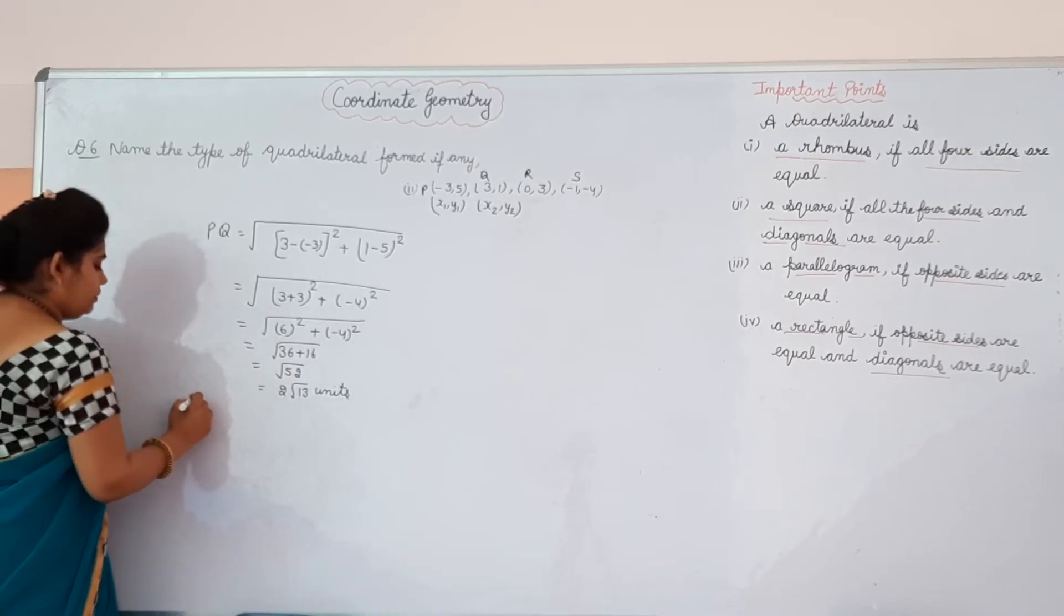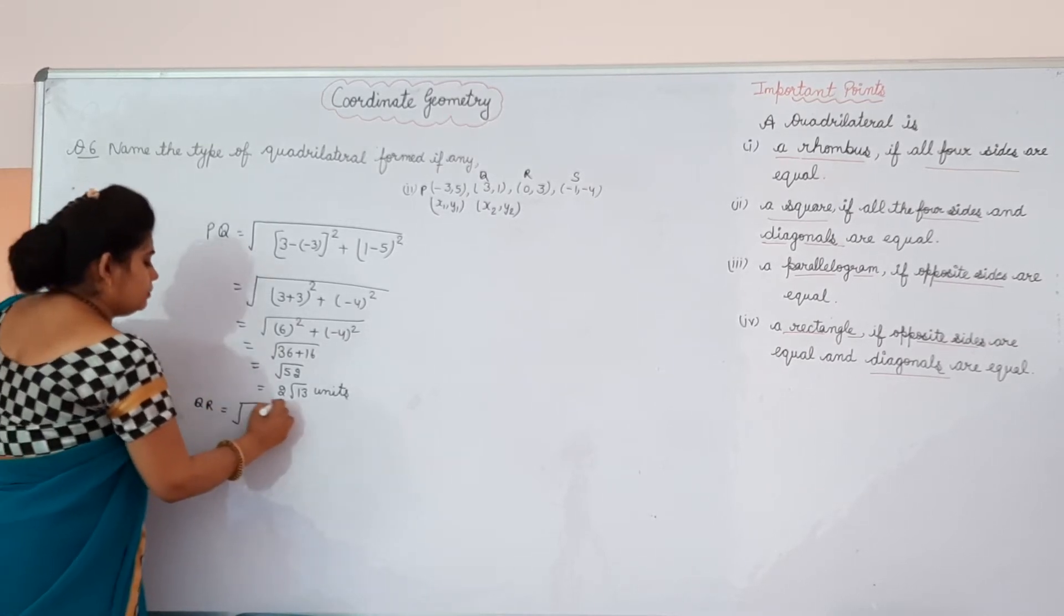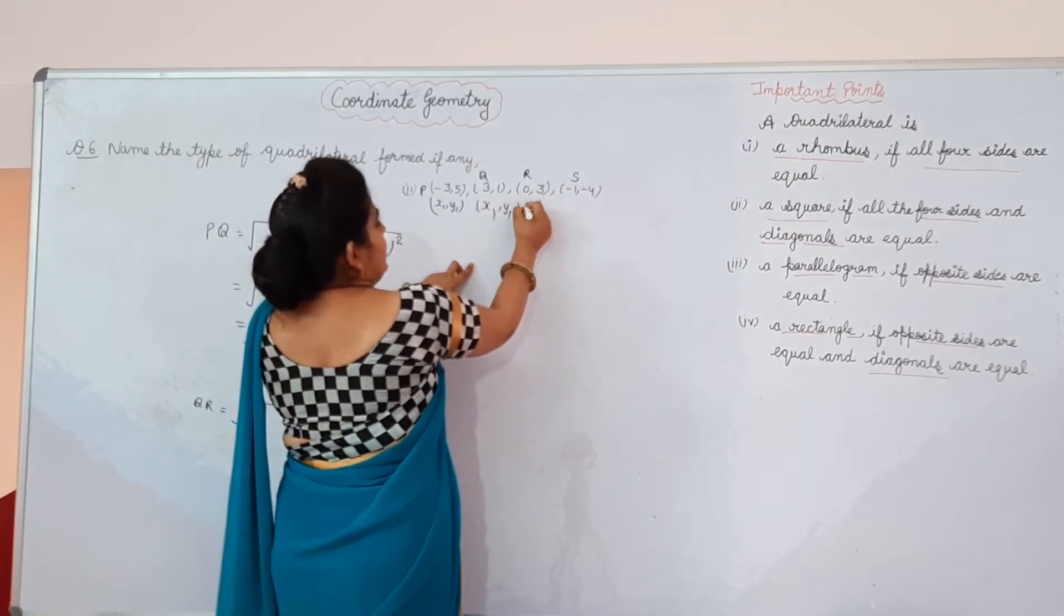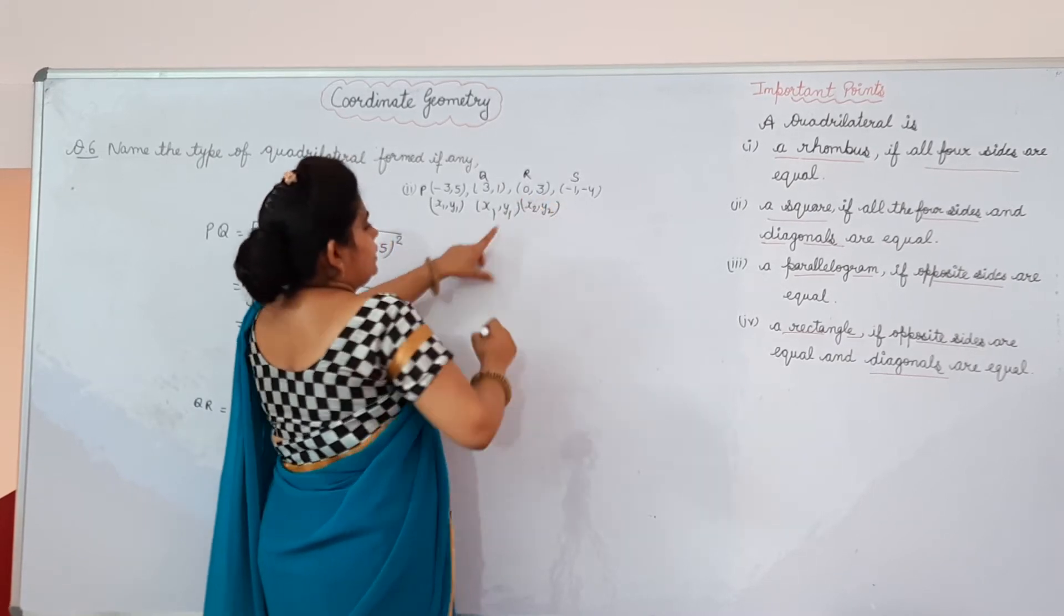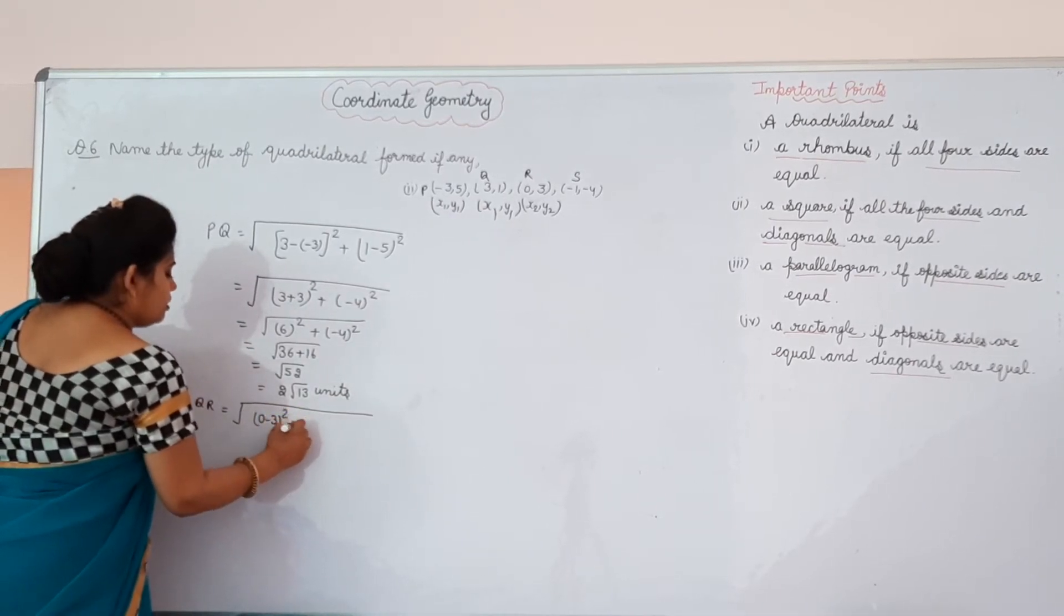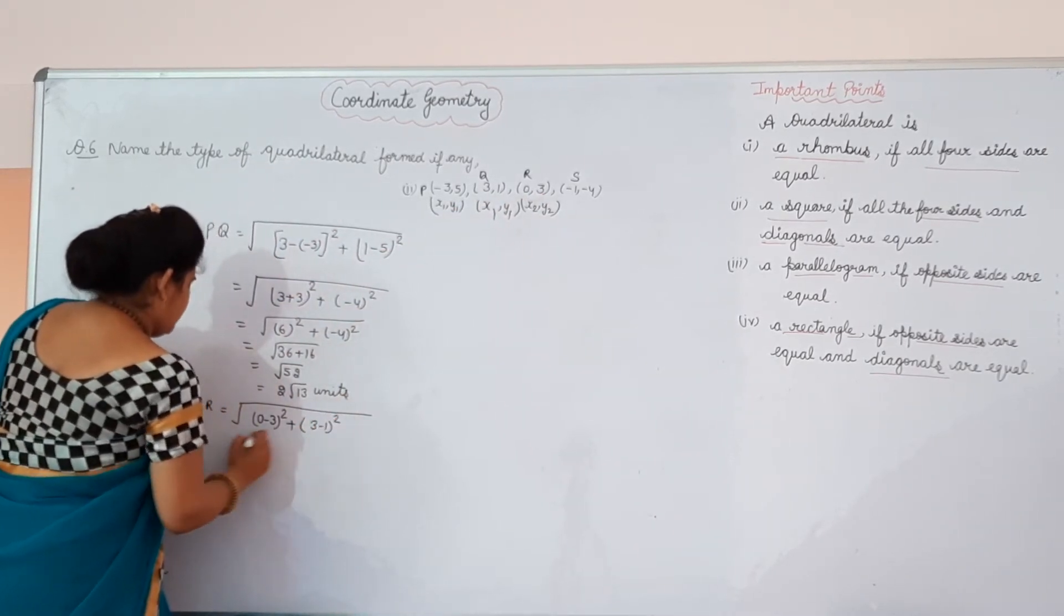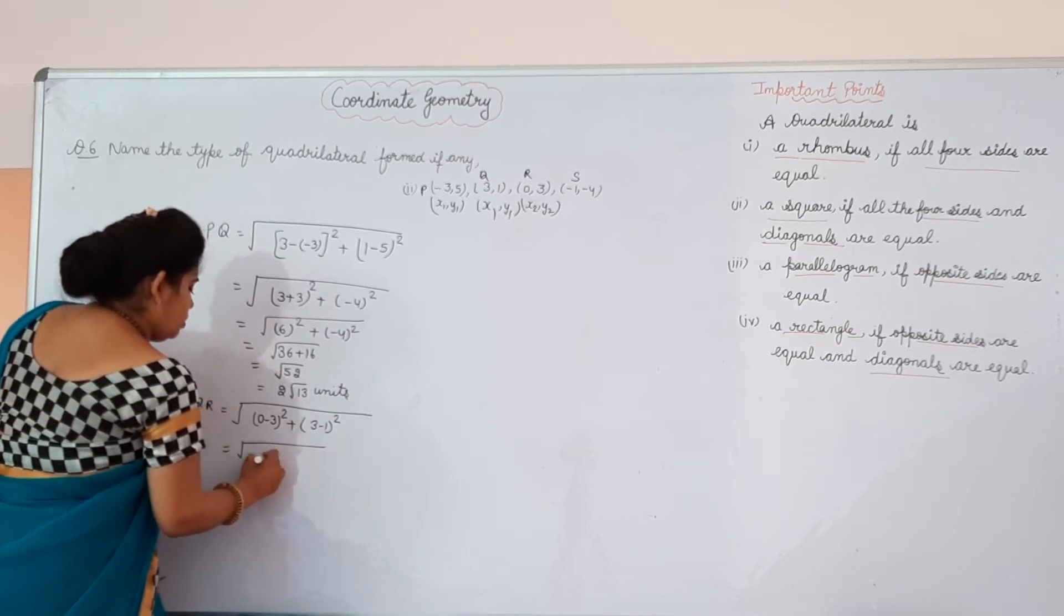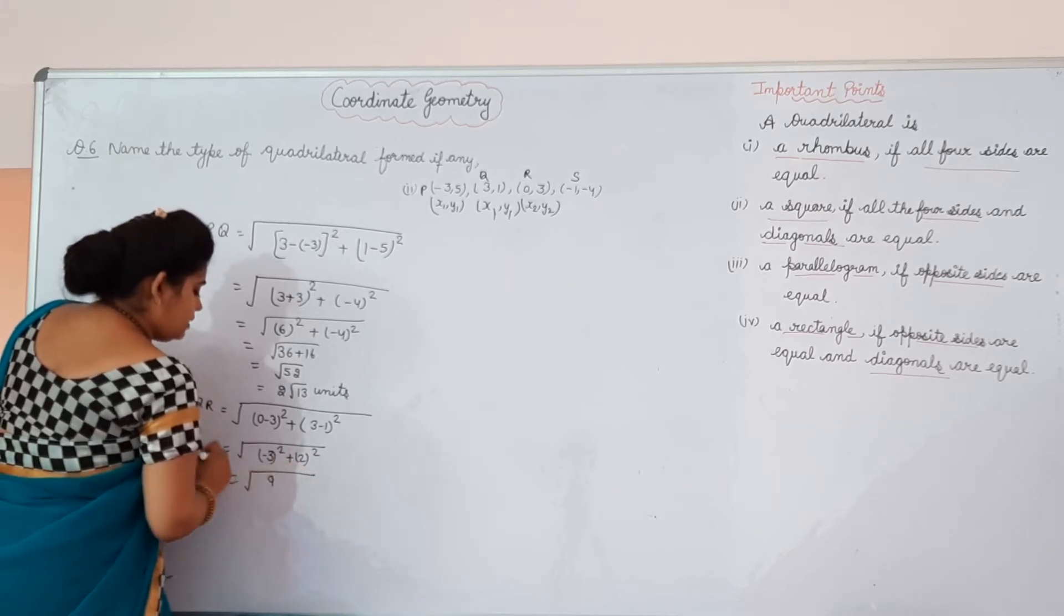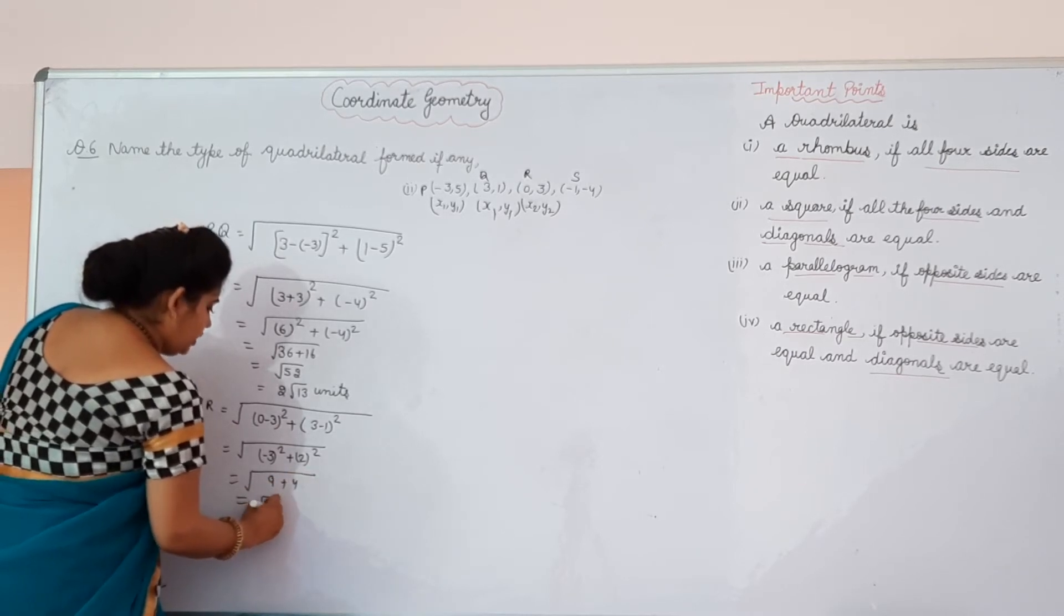Now we will find QR. For QR, let it is X1 and it is Y1, it is X2, Y2. Then 0 minus 3 whole square plus 3 minus 1 whole square, minus 3 whole square plus 2 whole square. Then minus 3 square is 9, 2 square is 4, and on adding we will get root 13 units.